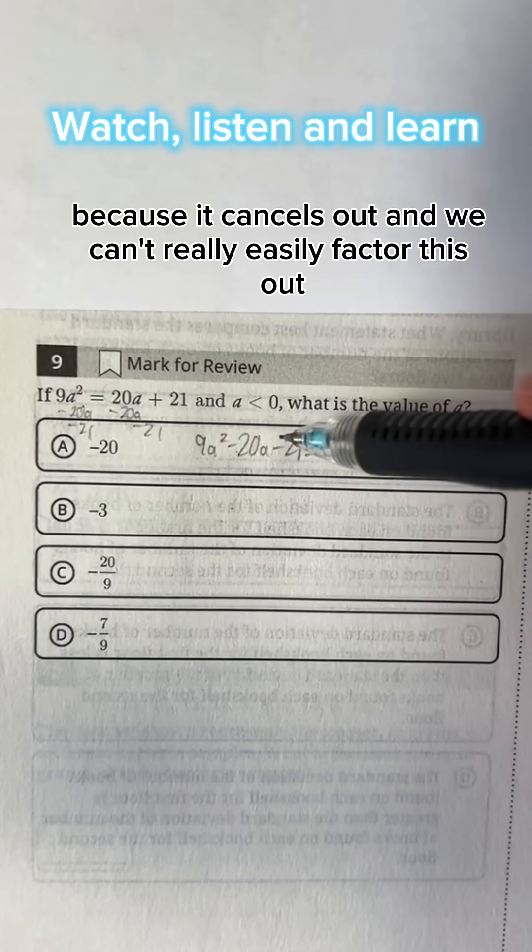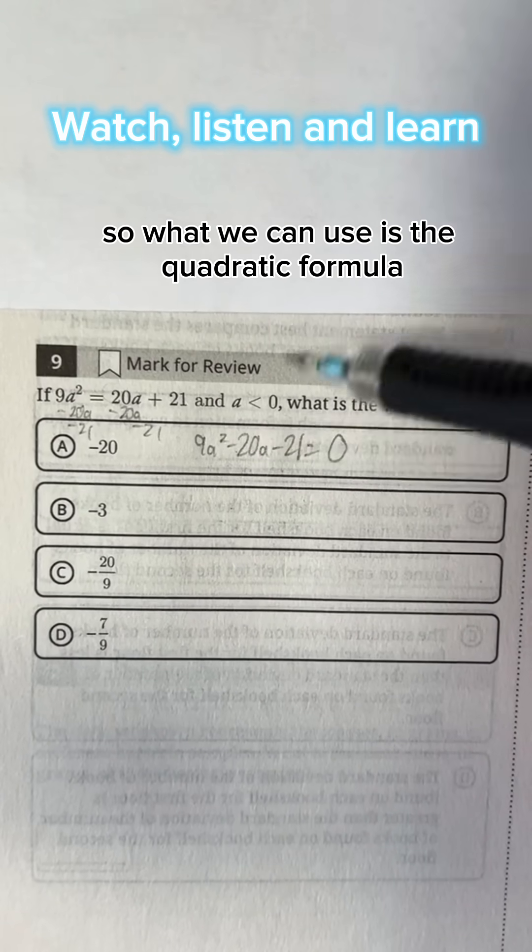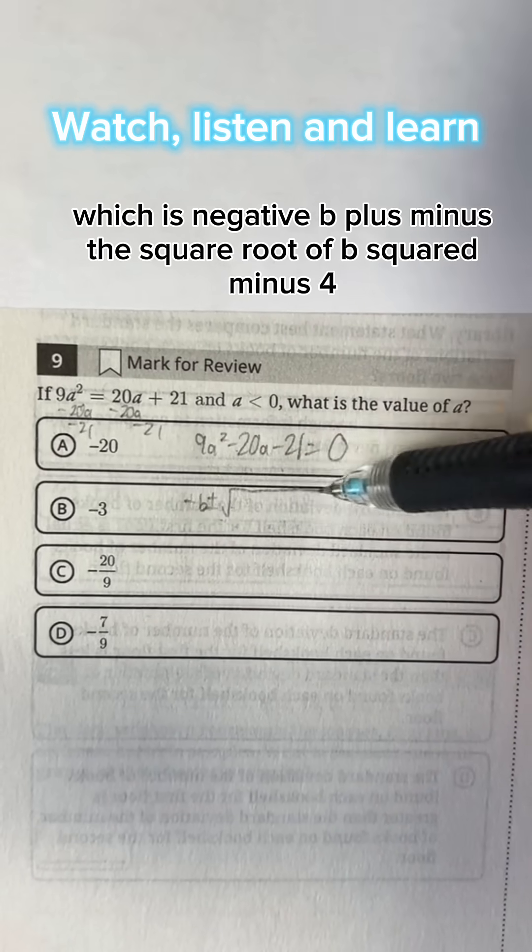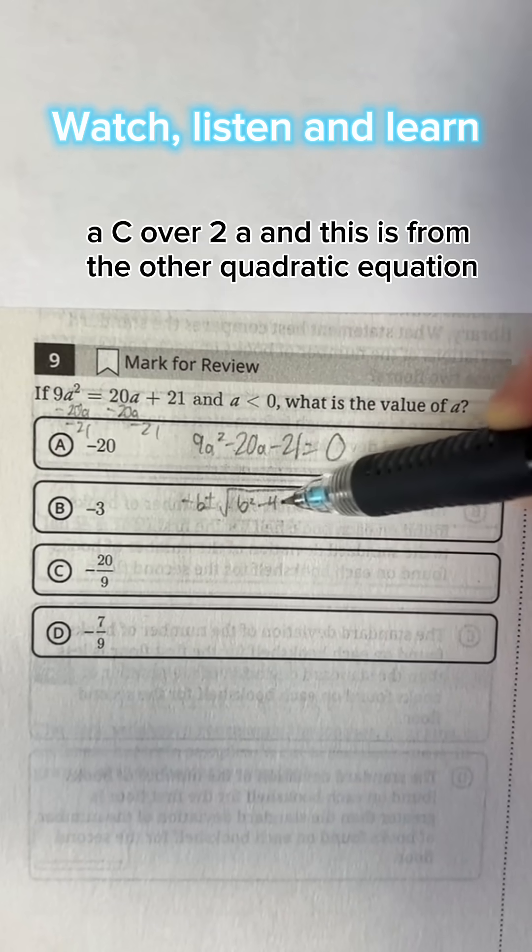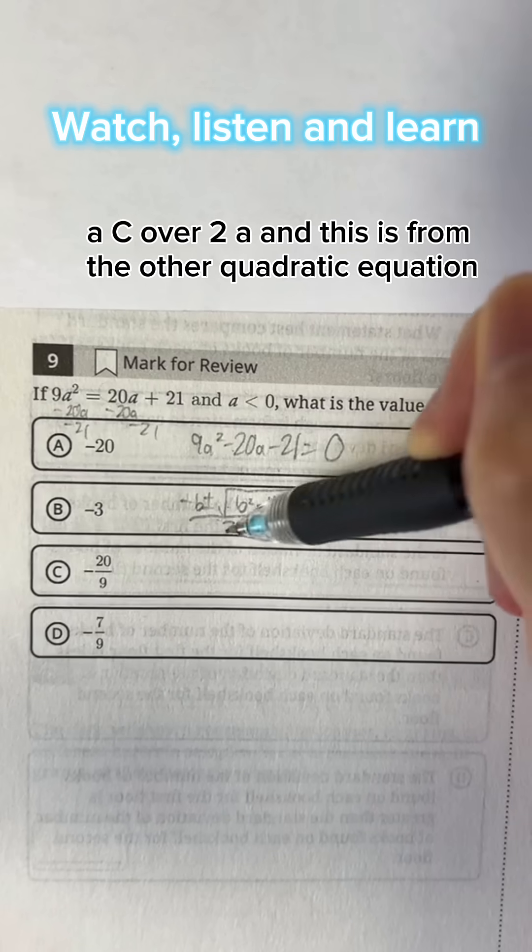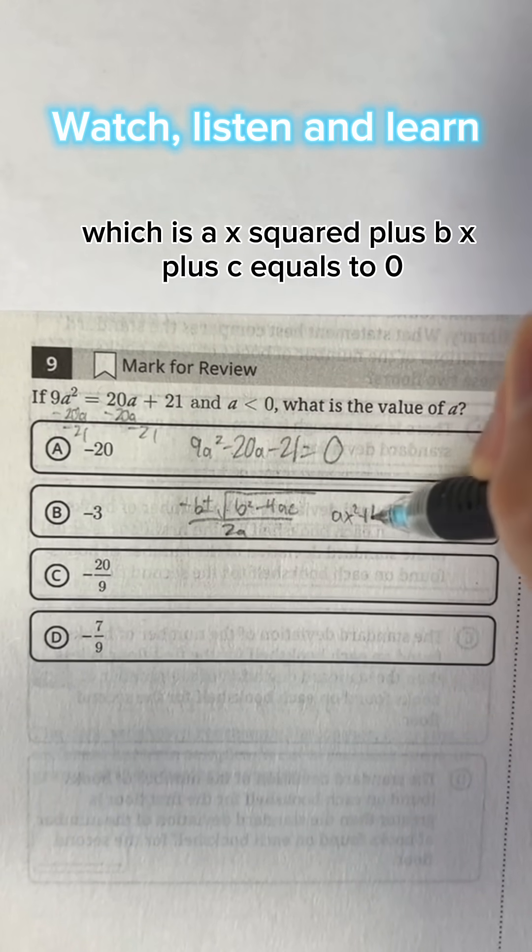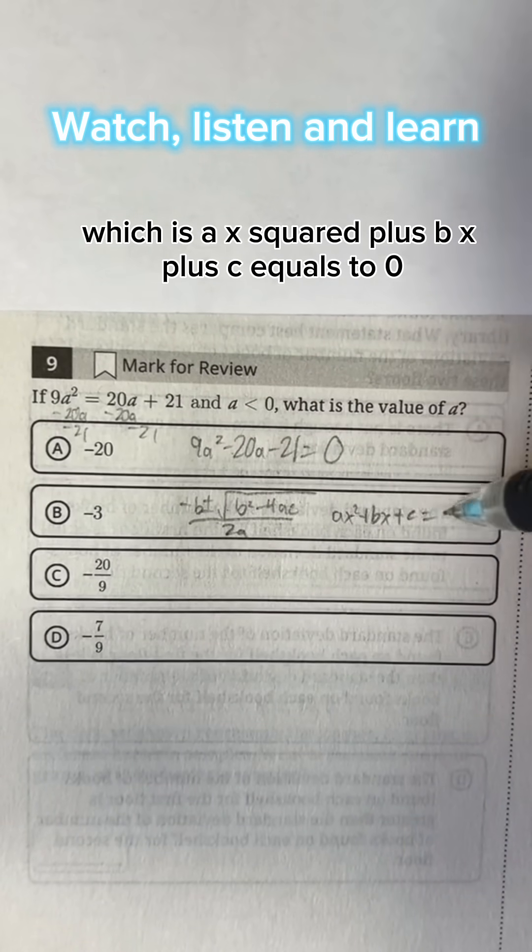And we can't really easily factor this out, so what we can use is the quadratic formula, which is negative b plus minus the square root of b squared minus 4ac over 2a. And this is from the standard quadratic equation, which is ax squared plus bx plus c equals 0.